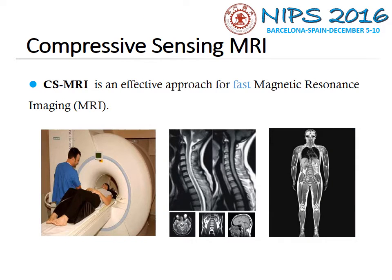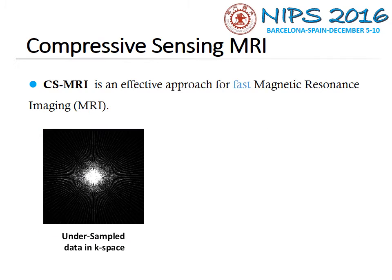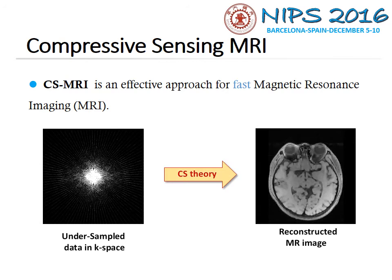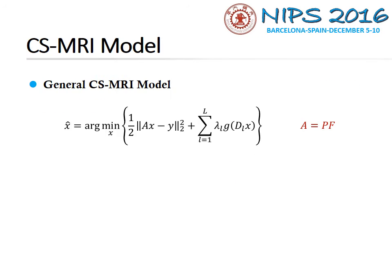CS-MRI is an effective method for fast MRI imaging. We first sample data from k-space, then reconstruct the MRI image using CS theory. The general CS-MRI model can be written as the following problem, where A is a partial Fourier transform.